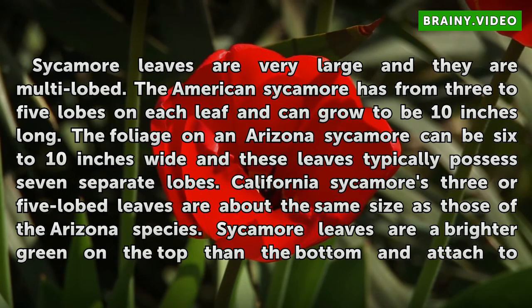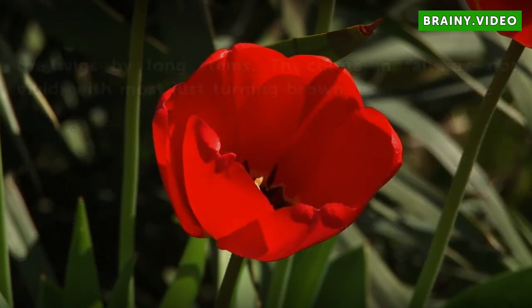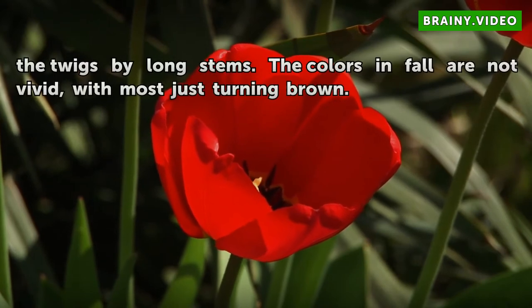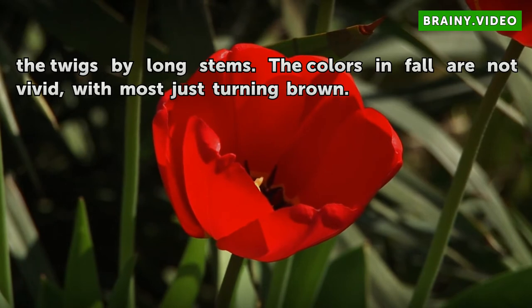Sycamore leaves are a brighter green on the top than the bottom and attached to the twigs by long stems. The colors in fall are not vivid, with most just turning brown.